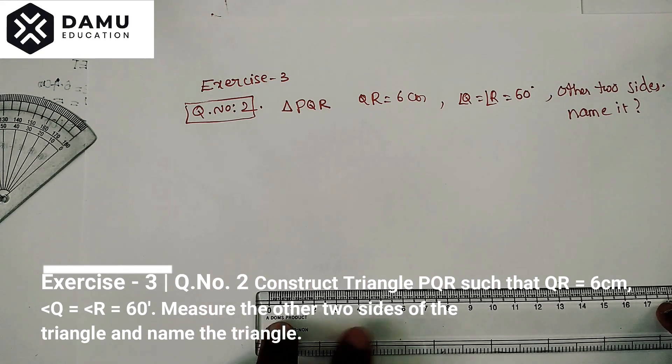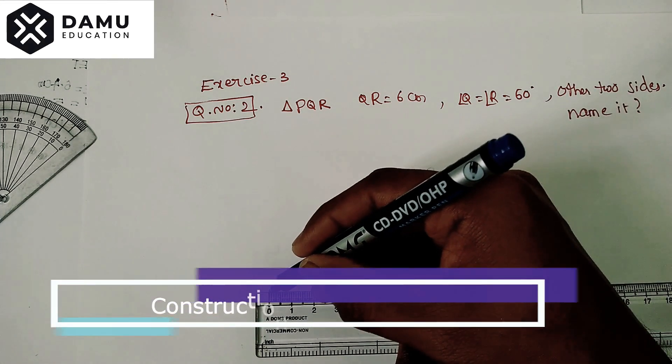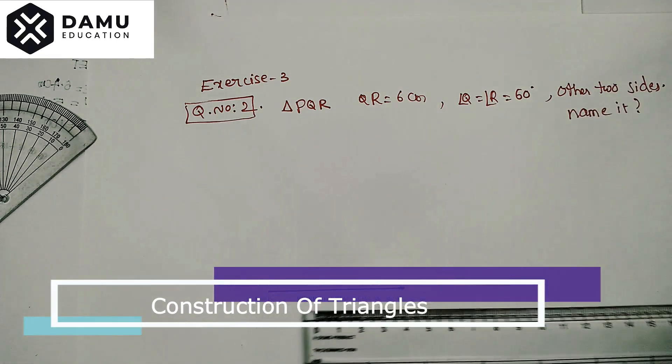Place your scale horizontally and from 0 to 6 centimeters draw one line segment. So what is that? It is QR with 6 centimeters.